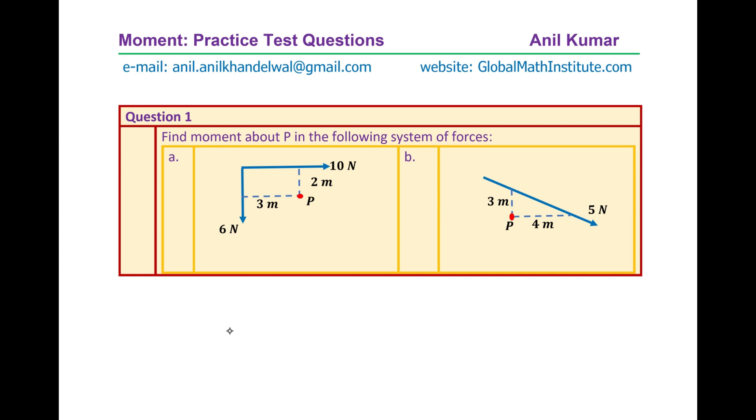Now in part B we are given the force which is oblique and from the point P we are given two distances which are 3 meter and 4 meters. Make a note that this is indeed not the shortest distance.